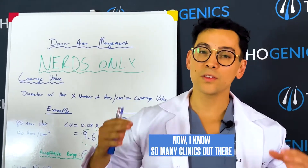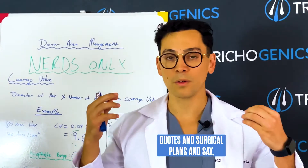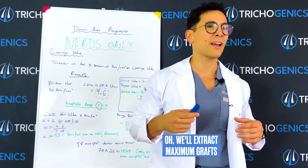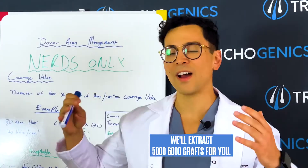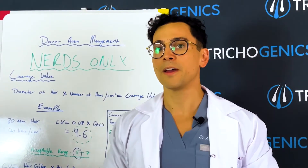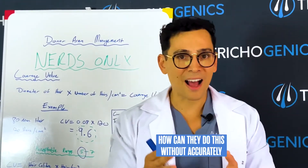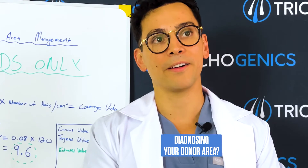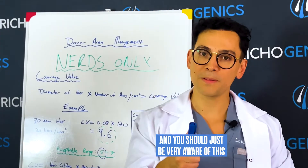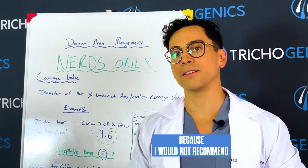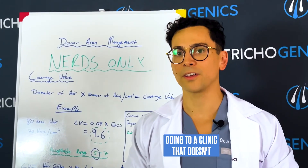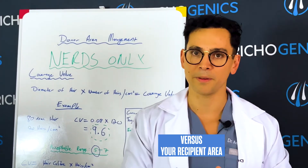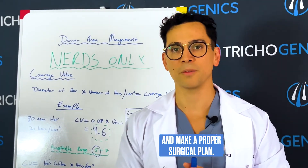I know so many clinics out there give patients quotes and surgical plans and say, 'We'll extract maximum grafts — 5,000 or 6,000 grafts for you.' My question is: how can they do this without accurately diagnosing your donor area? You should be very aware of this, because I would not recommend going to a clinic that doesn't actually mathematically assess your donor area versus your recipient area and make a proper surgical plan.